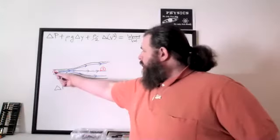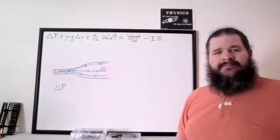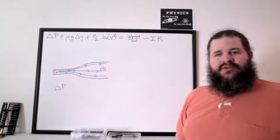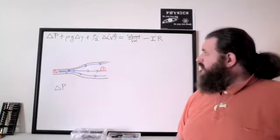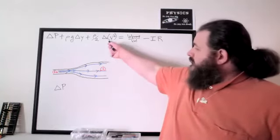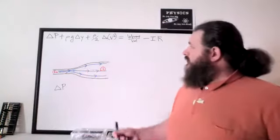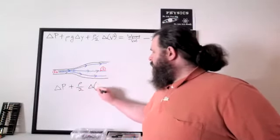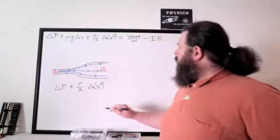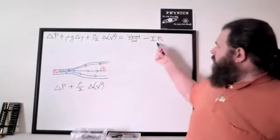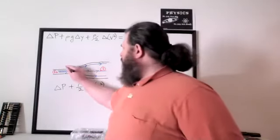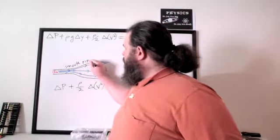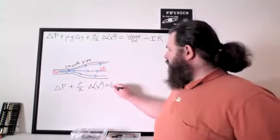Is there any difference in height between points one and two? No — we can ignore that; they're both at the same elevation. There could be a difference in speed though, because they have different cross-sectional areas. There's no pump, and let's assume the resistance is negligible — a very smooth pipe. So we just have delta pressure plus the kinetic energy term equals zero on the other side.